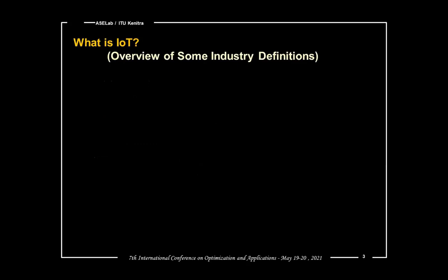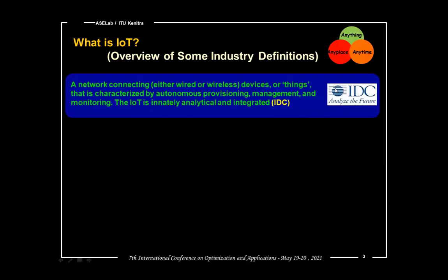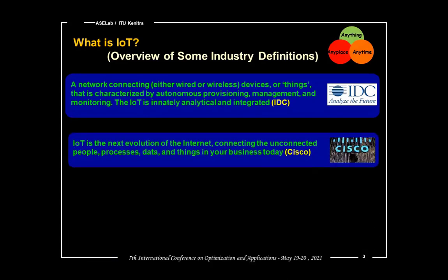The main aim of this part is to give an overview of some undisputed definitions of the Internet of Things. IoT is a vision of any time, any place, anything for anyone. According to ITU, IoT is a network of connected devices or things characterized by autonomous provisioning, management and monitoring. According to Cisco, IoT is the next evolution of the Internet, connecting the unconnected people, processes, data, and things in your business today.